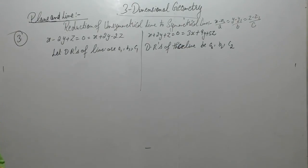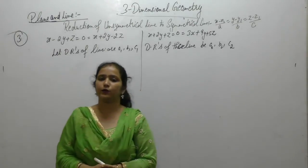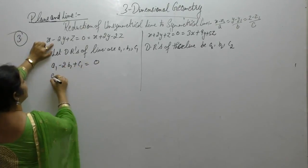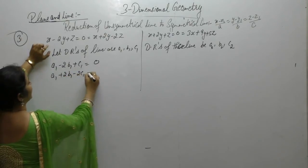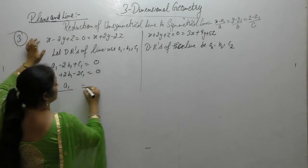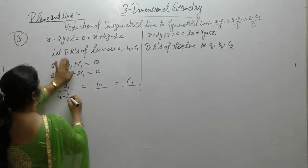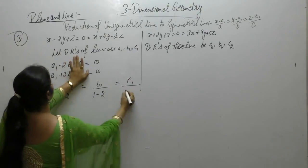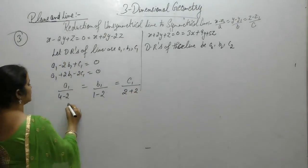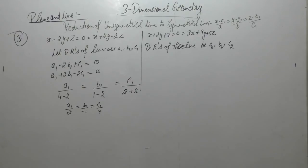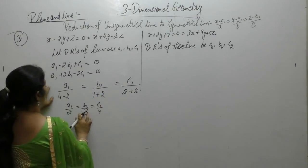Now, we have direction ratio since it lies in both the planes therefore, perpendicular to the normals. So, 1 into A1 minus 2, B1 plus C1 equals to 0 A1 plus 2, B1 minus 2, C1 equals to 0. Solve by using cross multiplication to find the value of A1, B1 and C1. A1 is 4 minus 2 B1 is 1 minus 2 C1 is 2 minus minus plus 2. So, A1 upon 2 B1 upon minus 1 and C1 upon 4. Minus minus plus 2 here. So, A upon 2 B upon 3 and C1 upon 4.